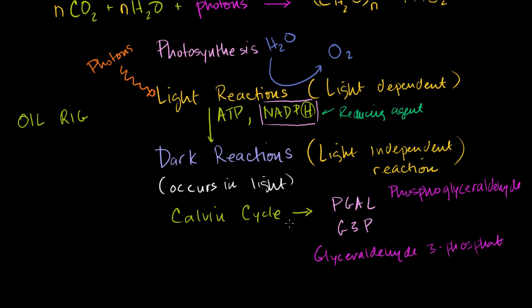Same exact molecule, you can almost imagine it as, this is a very gross oversimplification, three carbons with a phosphate group attached to it. But this can then be used to produce other carbohydrates, including glucose. If you have two of these, you can use those two to produce glucose.